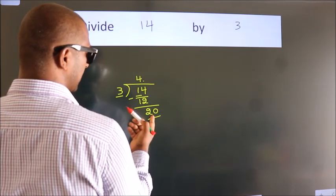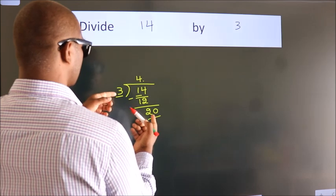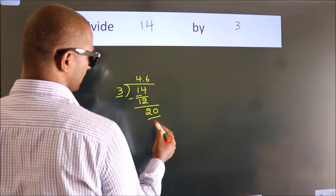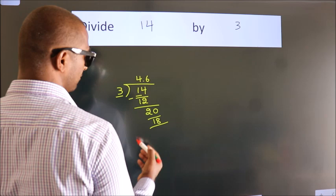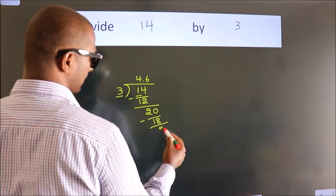A number close to 20 in the 3 table is 3 times 6 equals 18. Now we subtract. We get 2.